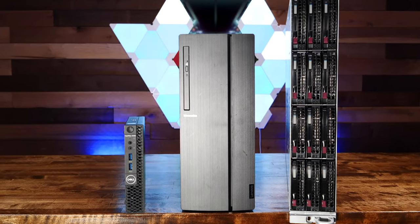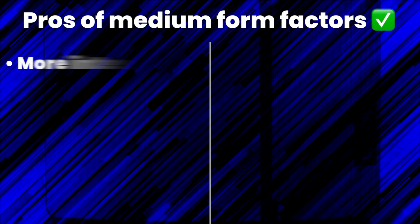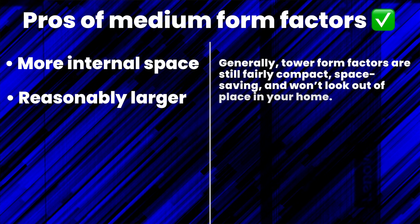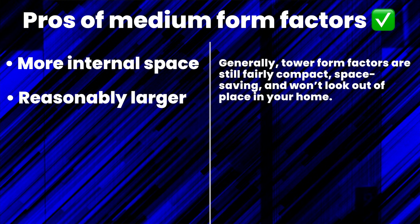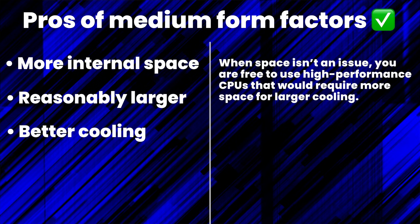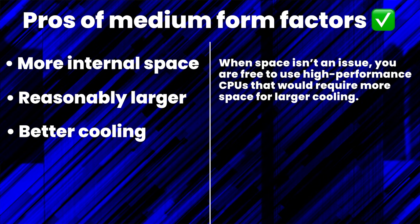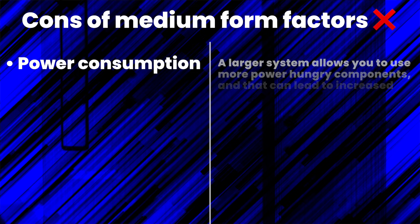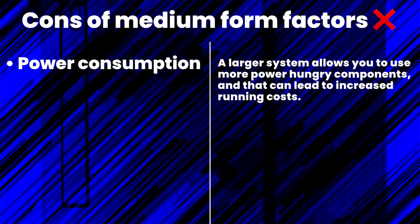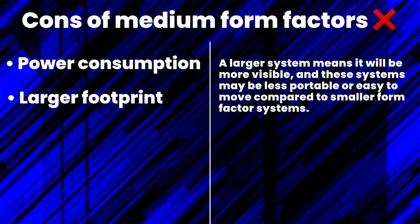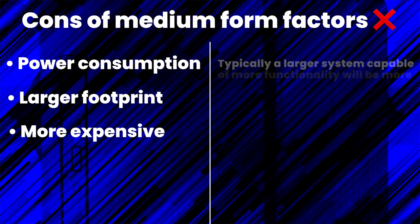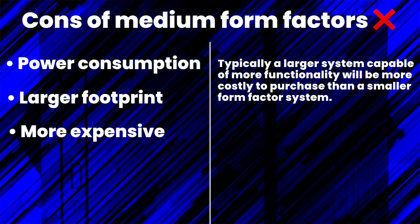The medium category encompasses desktops as well as standalone server towers. Pros include more space for upgrades, adding cards, and storage; they're larger but still fairly compact and won't look out of place in a home; better cooling since you're free to use higher performance CPUs with larger coolers; and a good balance between performance, physical size, and flexibility to grow. Cons include higher power consumption since a larger system allows more power-hungry components; a larger footprint making it less portable; and typically higher cost than smaller form factor systems.